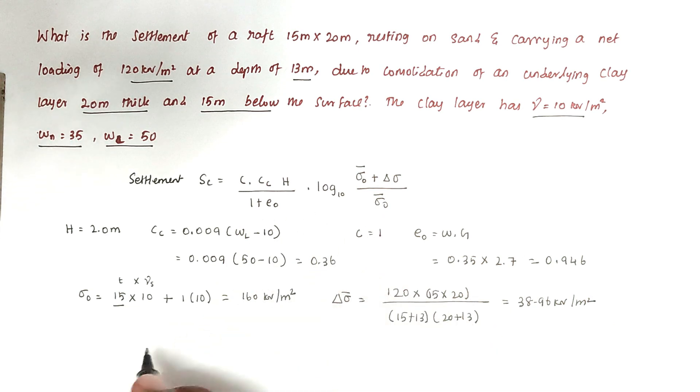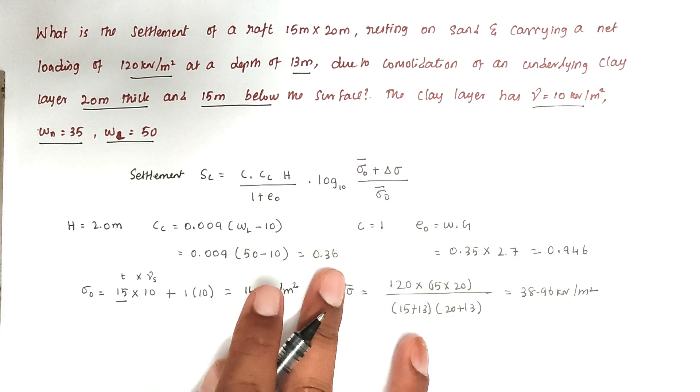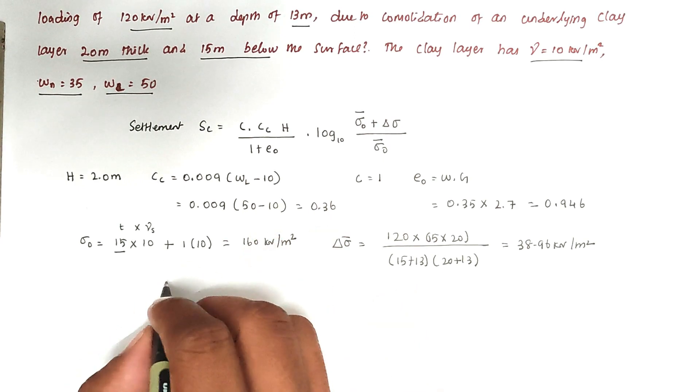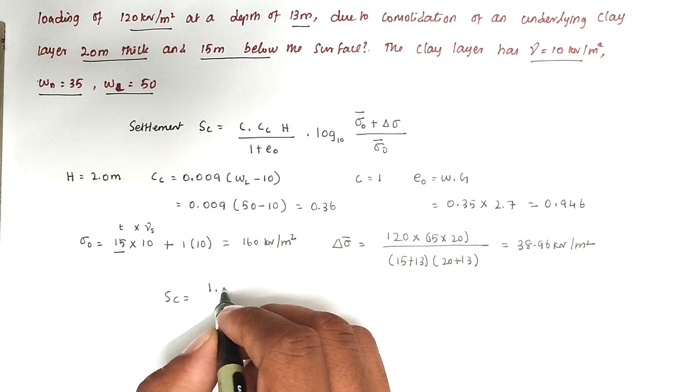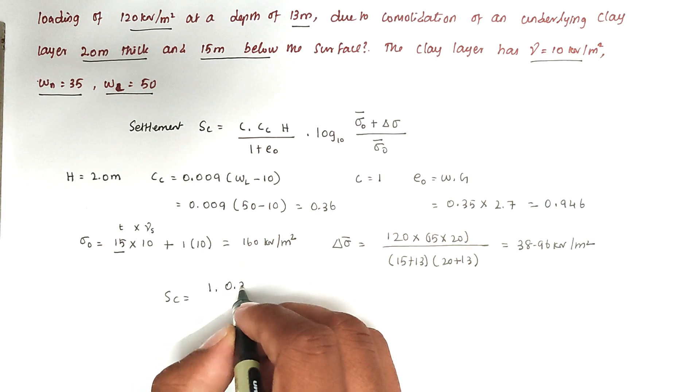Now we know all the values, so we can substitute directly. SC equals C is 1, and CC value we found is 0.36, times H value is 2 meters, divided by 1 plus 0.946.